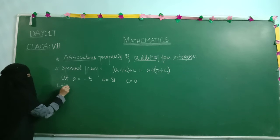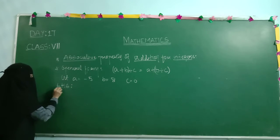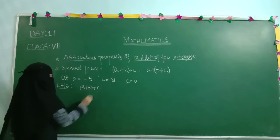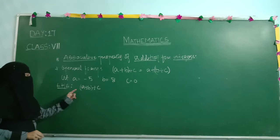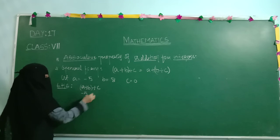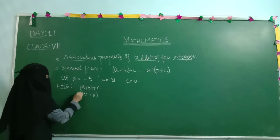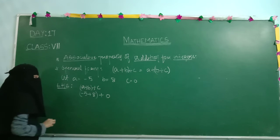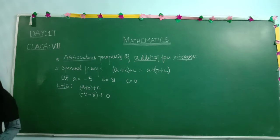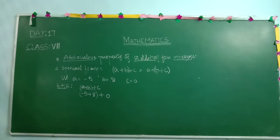First we take LHS — left hand side. The condition at LHS is: A plus B, in bracket, plus C. Substituting: minus 5 plus 8, in bracket, plus 0. We need to follow the BODMAS rule — B stands for brackets, O for of, D for division, M for multiplication, A for addition, S for subtraction. First we solve terms within the bracket, so we solve minus 5 plus 8 first.